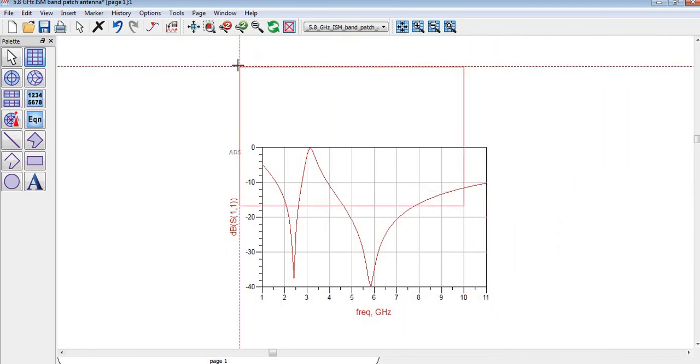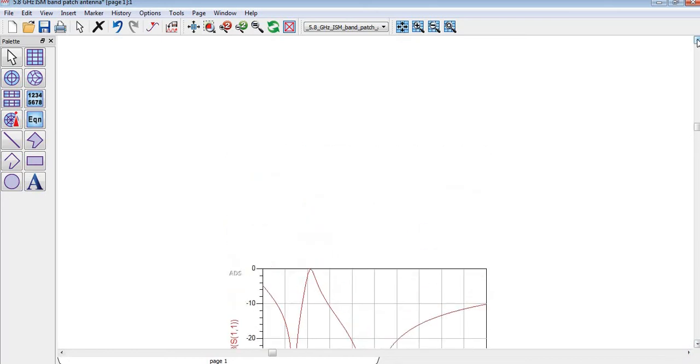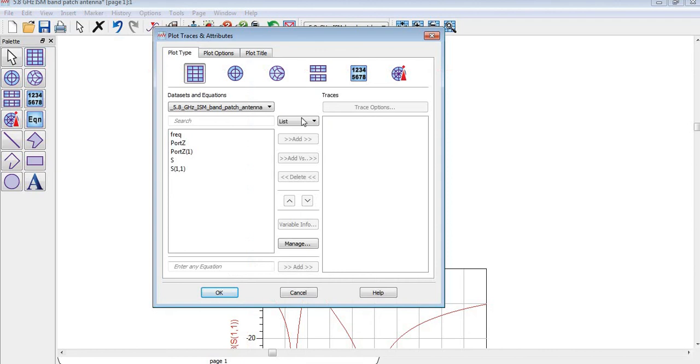For that you will need to come to any free space and then you will select this option. By clicking where you want to draw your S parameter.